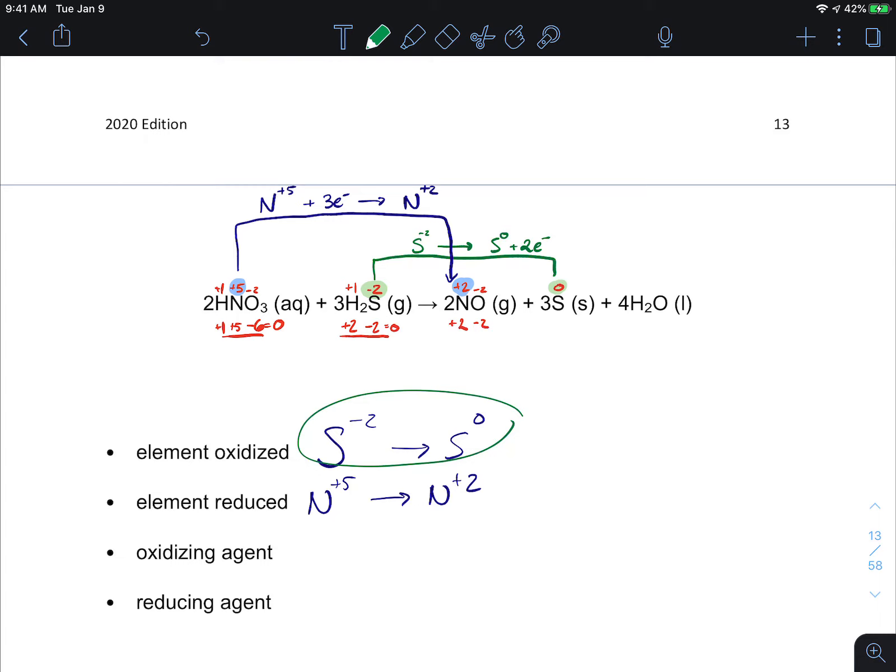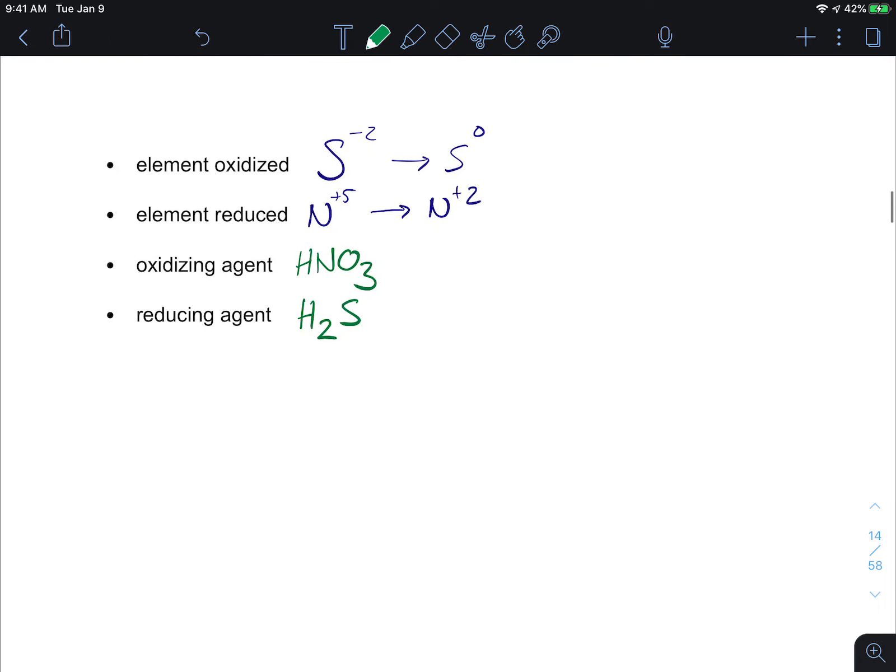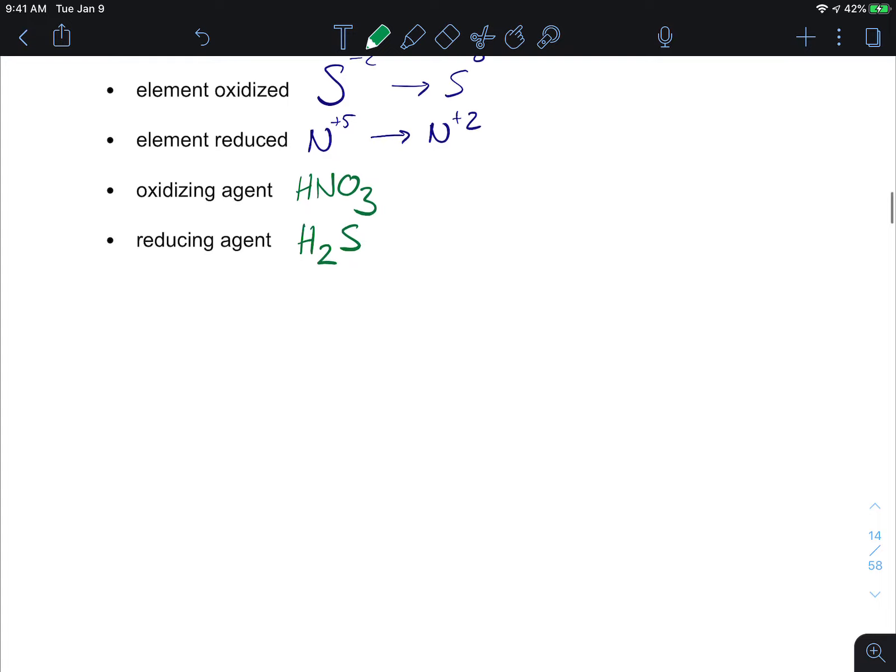Okay and who helped nitrogen become reduced? Well who helped the nitrogen become reduced in this chemical reaction? It was the dihydrogen sulfide, H2S.